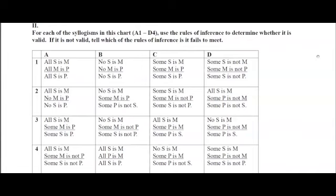So it fails — the middle term is not distributed. You can see why: if some S is M and some M is P, it may not be the case that any S is P, because the S that is M might be different than the M that is P. The two premises don't prove that the conclusion is true.